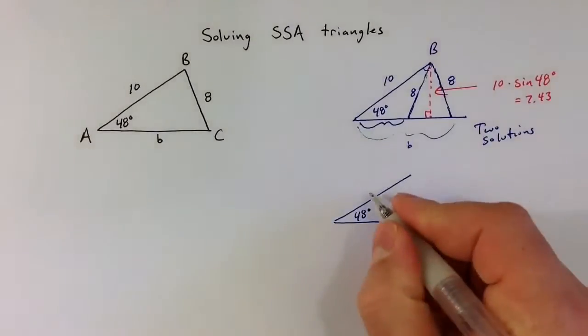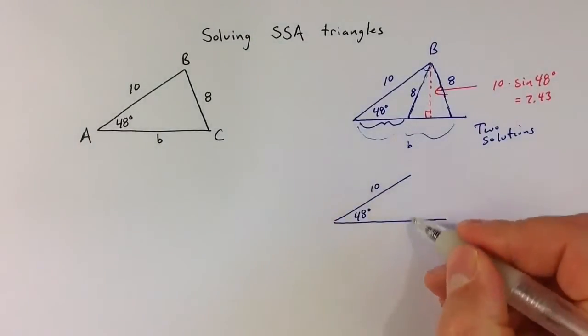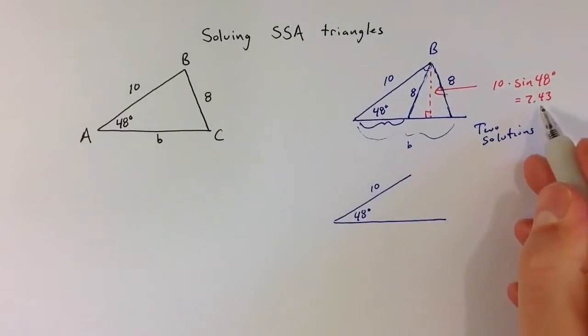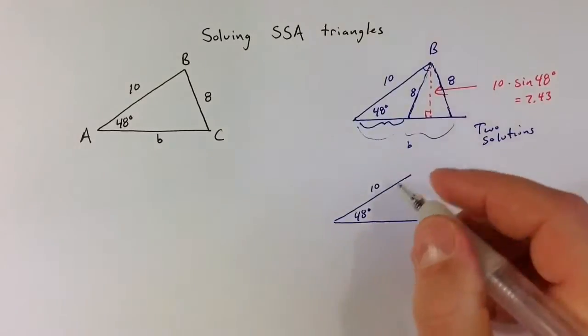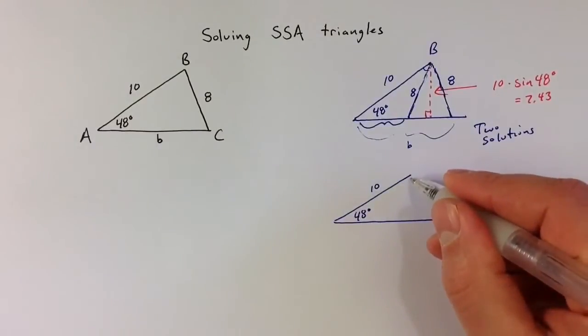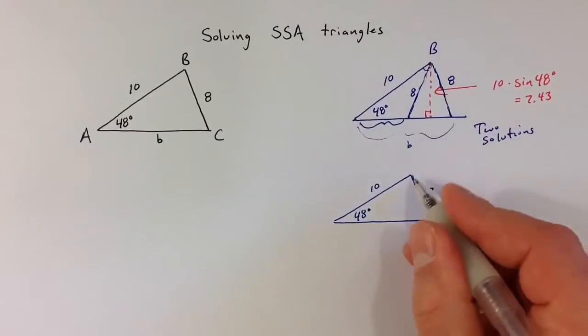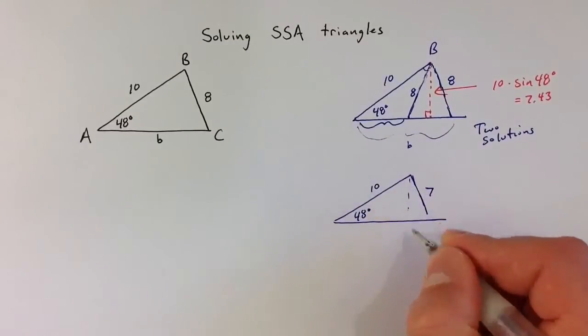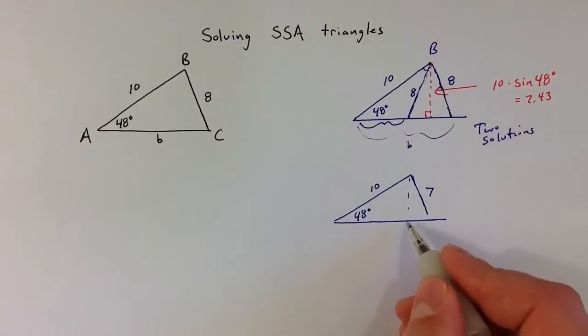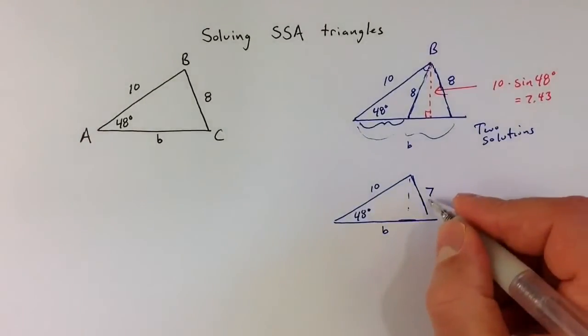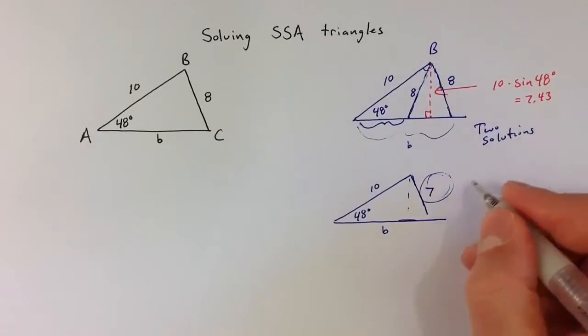Looking at a second diagram, because I know that shortest distance has to be at least 7.43, if the given third side was only seven units long, it wouldn't actually be able to reach all the way across. It wouldn't be able to make it to that side B. And so in that case, if this given side is too short, there are no solutions.